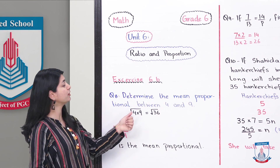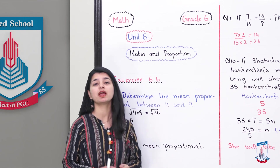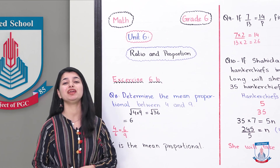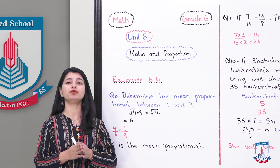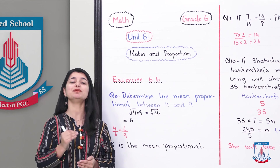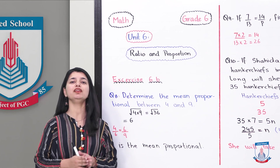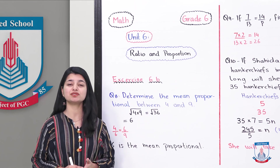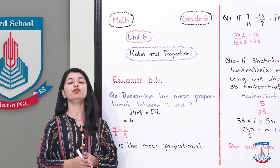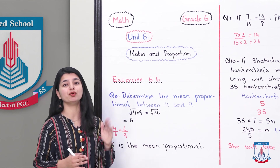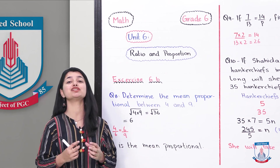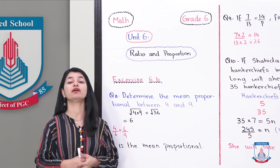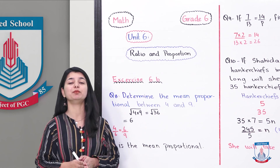Question number 8: determine the mean proportional between 4 and 9. Before we answer this question, we need to know what mean proportional is. In your textbook, when we talked about proportion, they talked about continued proportion. In continued proportion, the first and last numbers of the ratios are called extremes, and the middle numbers are called means. When both means are the same, we call that number the mean proportional.